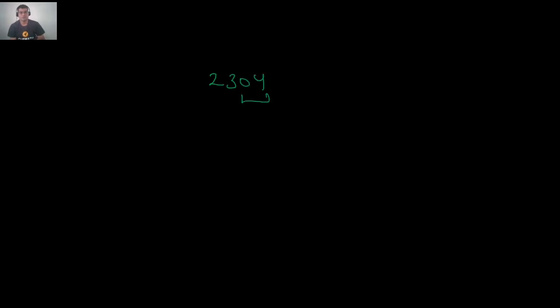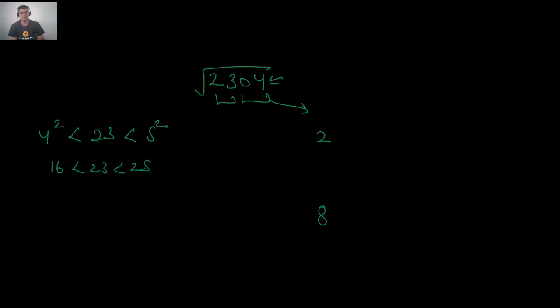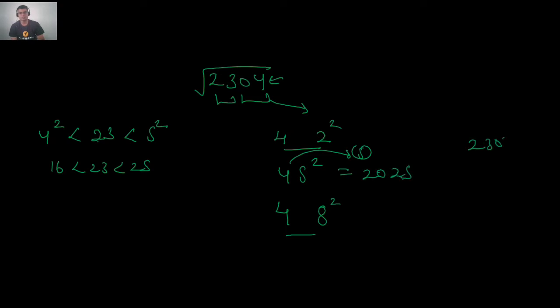Let us find √2304. Split: last two digits = 04, remaining = 23. Since it ends in 4, the square root ends in 2 or 8. Since 23 lies between 4² = 16 and 5² = 25, the square root lies between 40 and 50. Check 45²: 4 × 5 = 20, appended with 25 = 2025. Since 2304 > 2025, the square root is greater than 45. So the answer ends in 8, giving √2304 = 48.